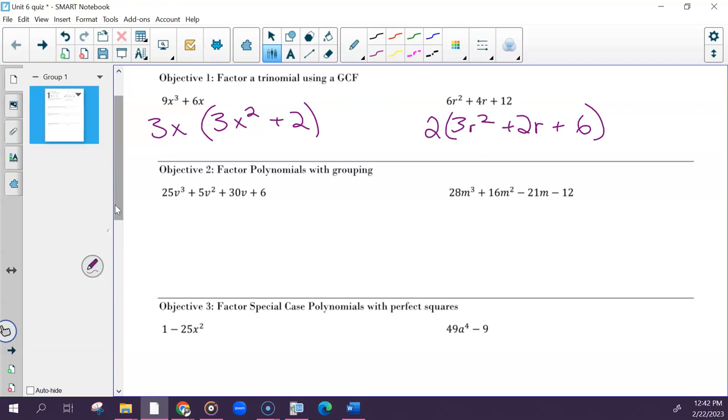For the second objective, where you had to factor by grouping, split that down the middle. For the GCF of the first two, which was 5v squared, divide that out of both, which would leave you with 5v plus 1. Then for the second set of numbers, GCF is 6 plus 6. If you divide that out of both, you're left with 5v plus 1. Then your final answer, the outside numbers become one of your factors, 5v squared plus 6, and the inside become the other, 5v plus 1.